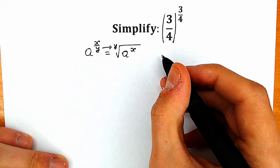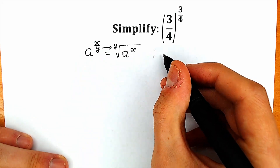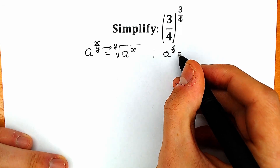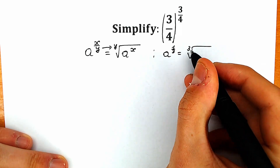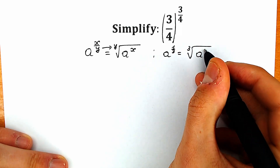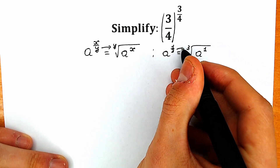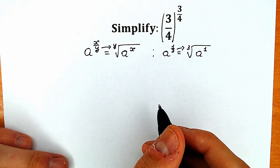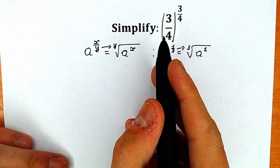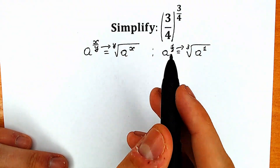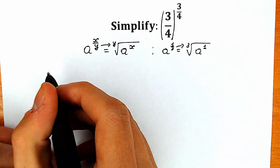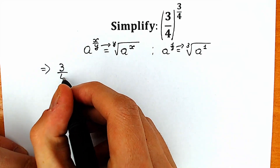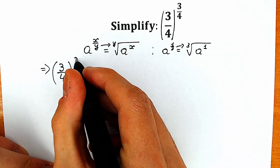Here is a quick example: we have a to the power one-third. We can easily write it as the cube root of a to the power one. So this three indicates the power of the root. Right now let's look closely at our question — we have three-fourths to the power three-fourths.